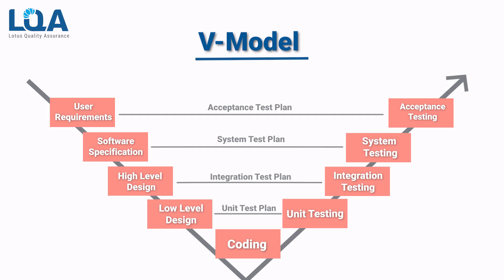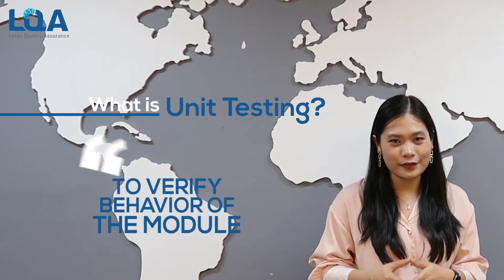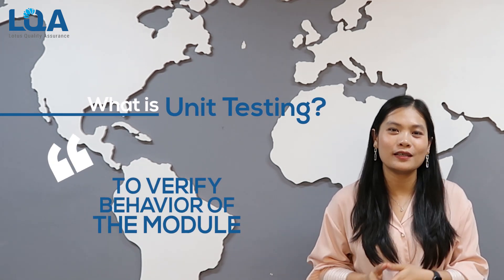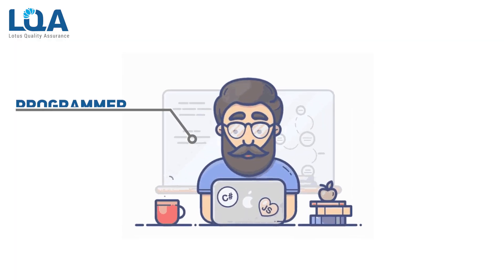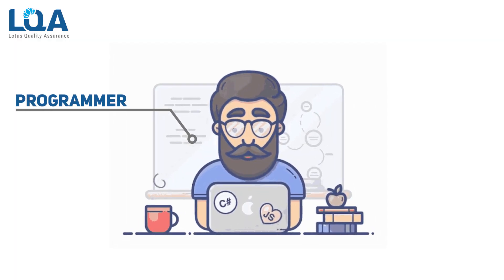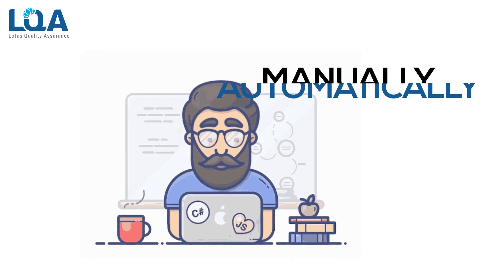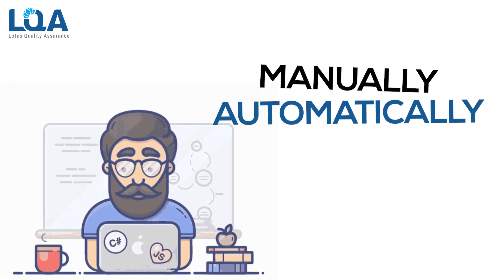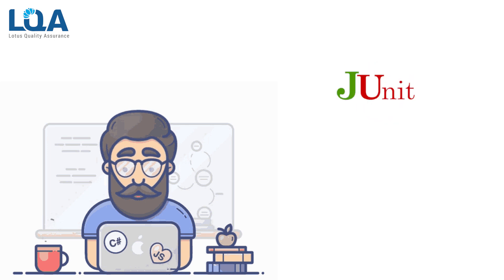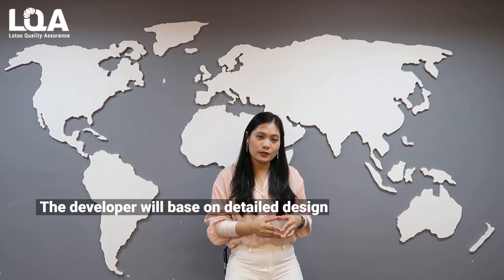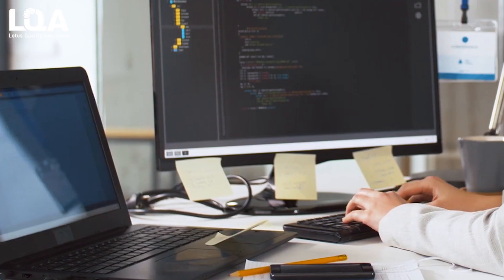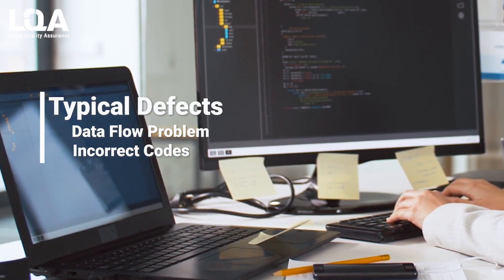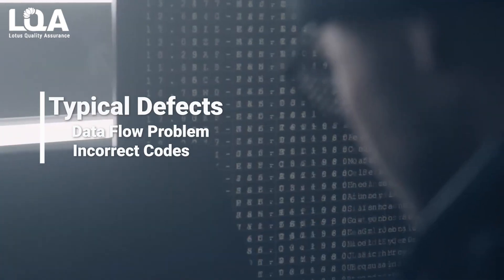Following the timeline, we start with unit testing. Unit testing, also known as component testing, is to verify the functional and non-functional behavior of a module in the system. The programmer will do the unit testing by isolating their module from the rest of the system — manually or automatically using a tool such as NUnit. The developer will check the code and data structure of the database based on the detailed design, in order to find any data flow problems or incorrect code.